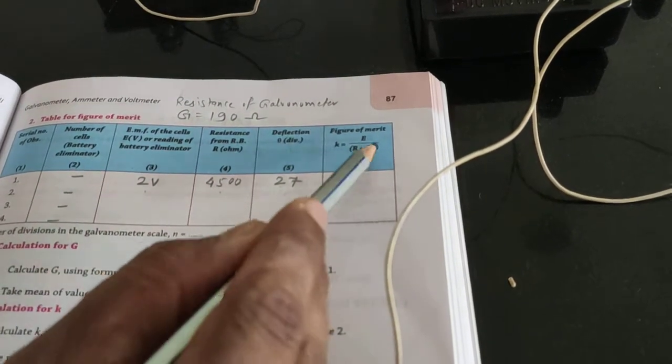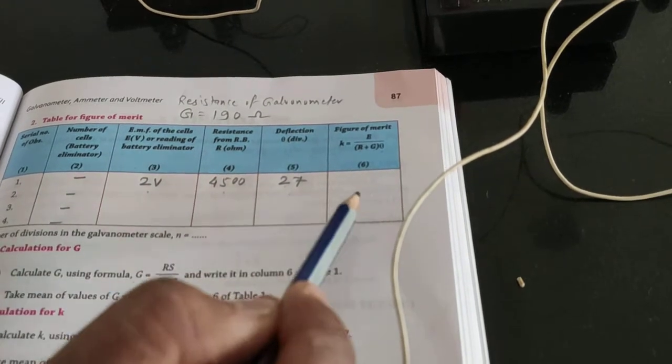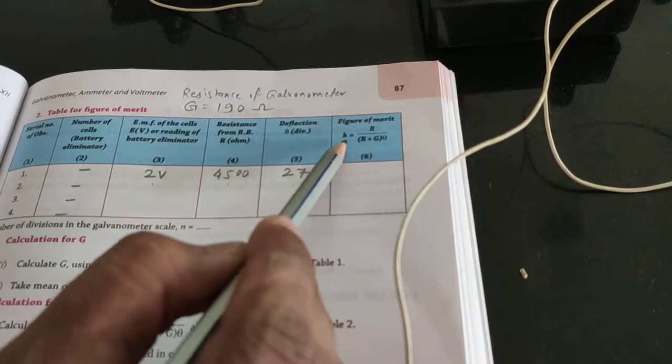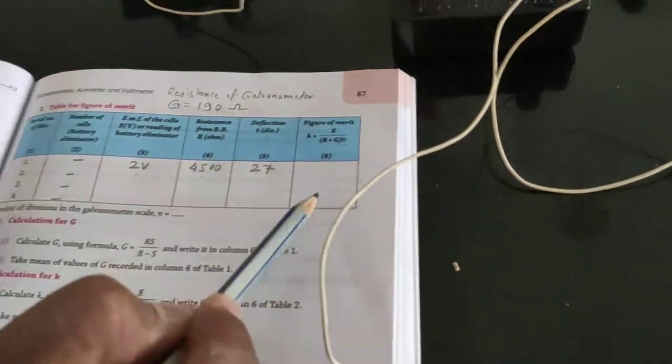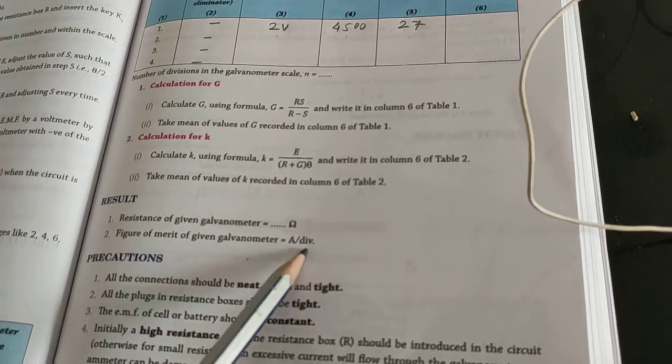By taking all the different readings, approximately 4-5 readings, we will take that - I will send you in a PDF form. You will get the different values or approximately same values of figure of merit. Again we will take mean value of that, and we can write the figure of merit value in ampere per division.